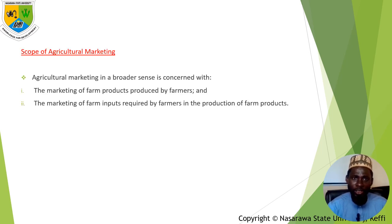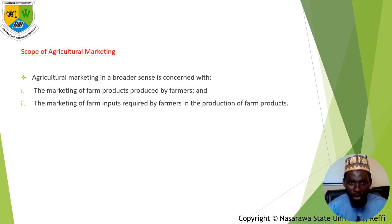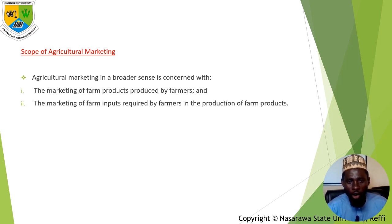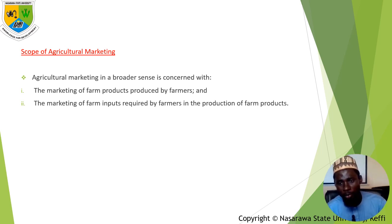Let's look at the scope of agricultural marketing. Agricultural marketing, in a broader sense, is concerned with the marketing of farm products — that is, the produce by the farmers — as well as the marketing of farm inputs required by farmers in the production of farm products. In other words, the scope of marketing has to do with the product market as well as the factor markets.